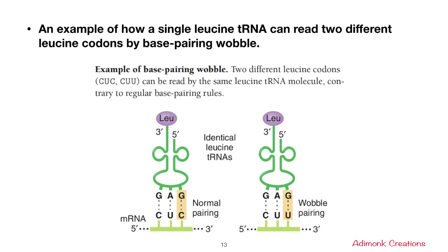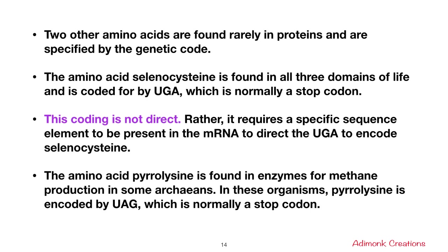Two other amino acids are rarely found in proteins. The amino acid selenocysteine is found in all three domains of life and is coded by UGA, which is normally a stop codon; however, a specific sequence element in the mRNA is required to direct UGA to incorporate selenocysteine. The amino acid pyrrolysine is found in enzymes for methane production in some archaea; in these organisms, pyrrolysine is encoded by UAG, which is also normally a stop codon.